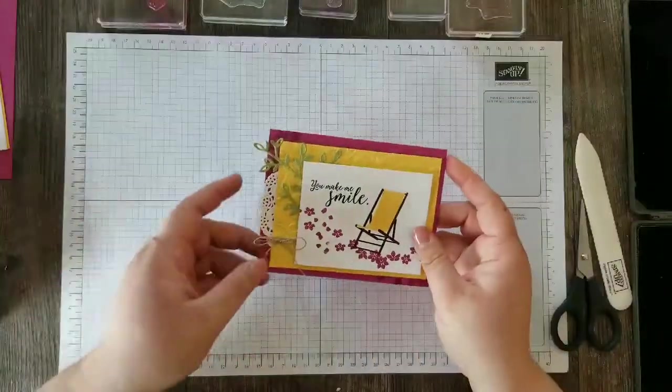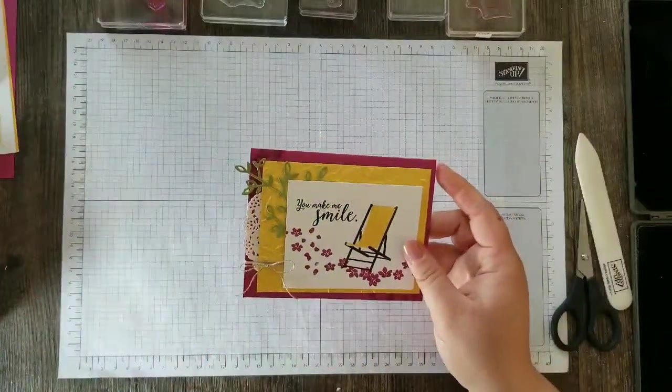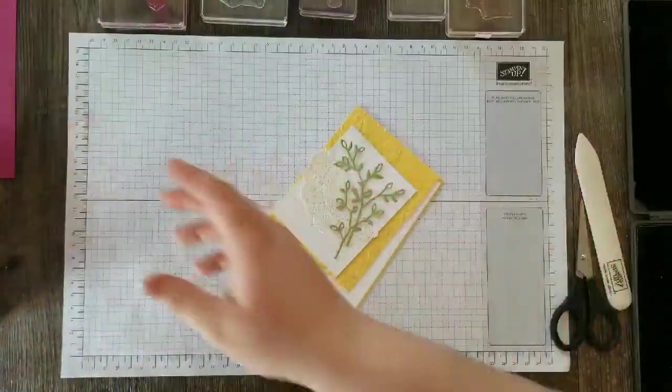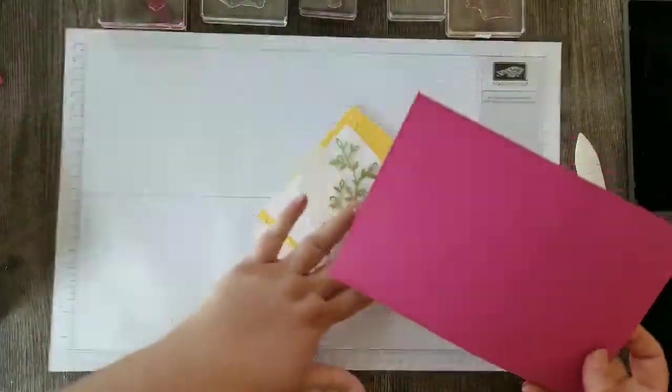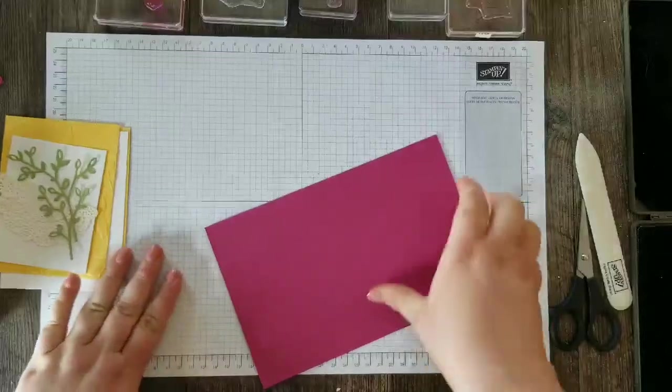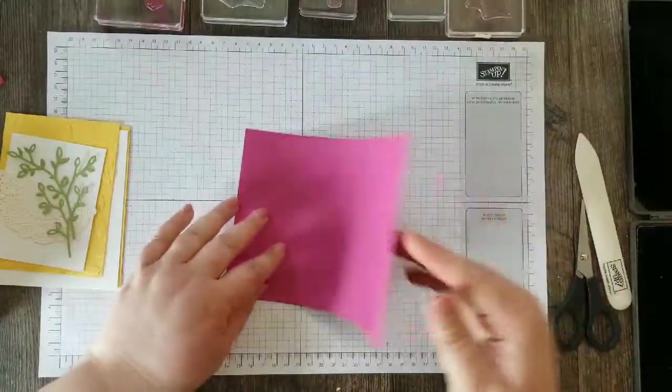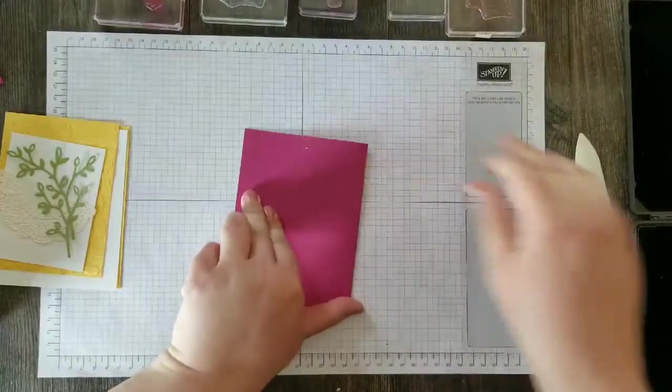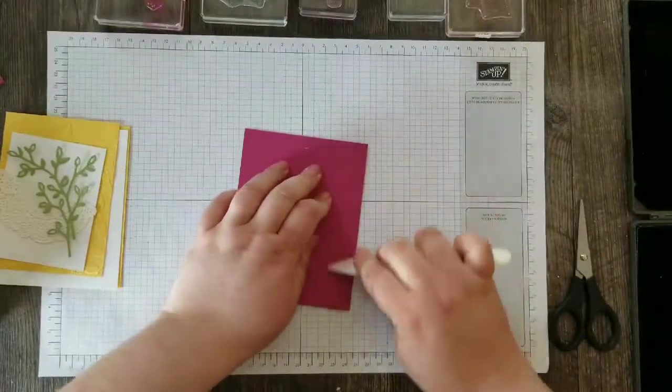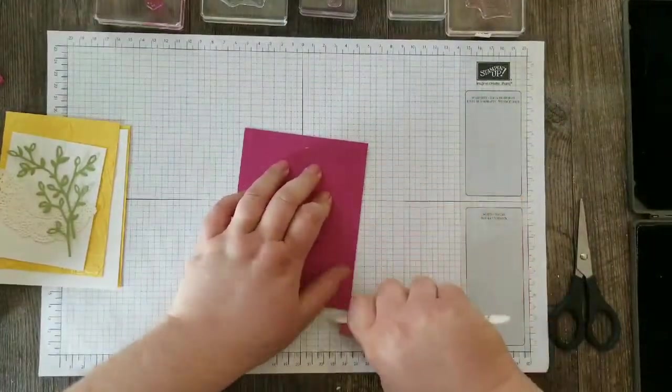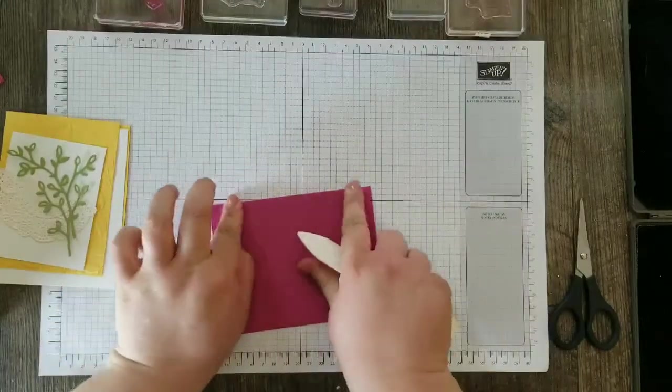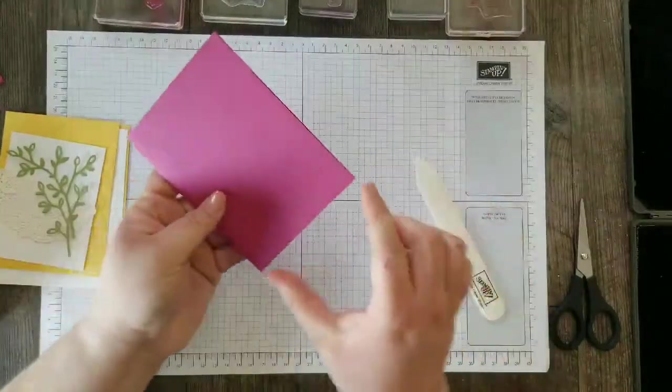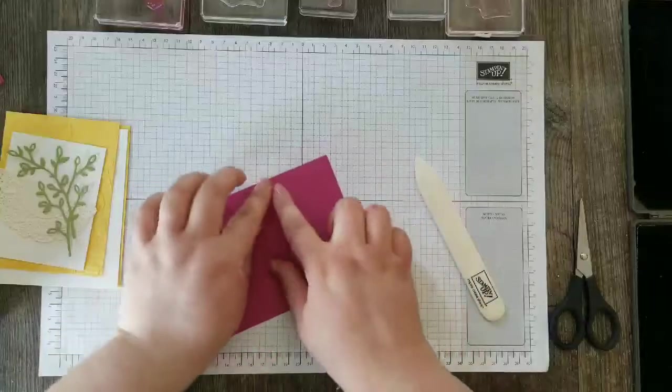The first project we're going to make is the card and I've got some of the layers already cut for you. I'm using the Berry Burst card base and my card base is cut five and a half by eight and a half, and then I fold it here so that our card front is four and a quarter by five and a half.